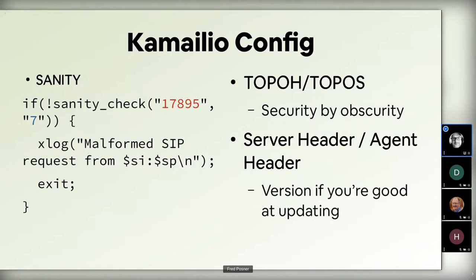Topology hiding and topology stripping help you secure your system through obscurity — you can hide some information and strip out information coming to your system that could affect something else. If you're worried about something attacking a system behind Kamailio, you can strip out any X-headers or unwanted content, or use the topos module, which acts somewhat like a B2BUA, though it's clearly not one.